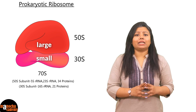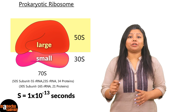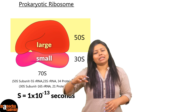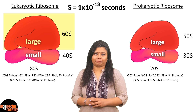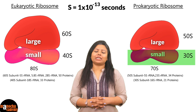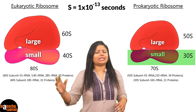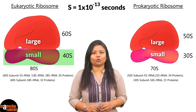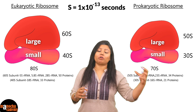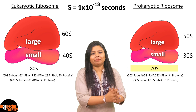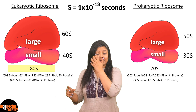In prokaryotes, the larger subunit has a sedimentation coefficient of 50S (where S = 1 × 10⁻¹³ seconds), while in eukaryotic cells it is 60S. The smaller subunit in prokaryotic cells has a sedimentation coefficient of 30S, whereas in eukaryotic cells it is 40S. When the larger and smaller subunits join together, the entire ribosome sediments at 70S in prokaryotes and 80S in eukaryotes.